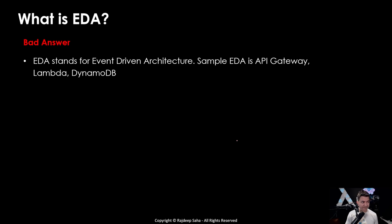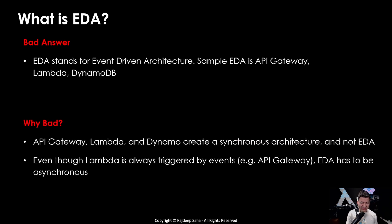Next question: what is EDA? A bad answer is: EDA stands for event-driven architecture. A sample EDA is API Gateway, Lambda, DynamoDB. Why is this bad? API Gateway, Lambda, and DynamoDB create a synchronous architecture — not EDA. Even though Lambda is always triggered by events (for example from API Gateway), EDA has to be asynchronous. So in your answer the definition is not enough — you need to show the properties or superpowers of EDA, ideally with an example.